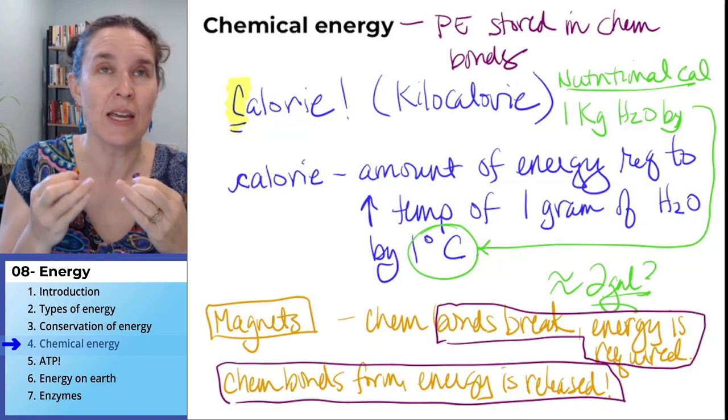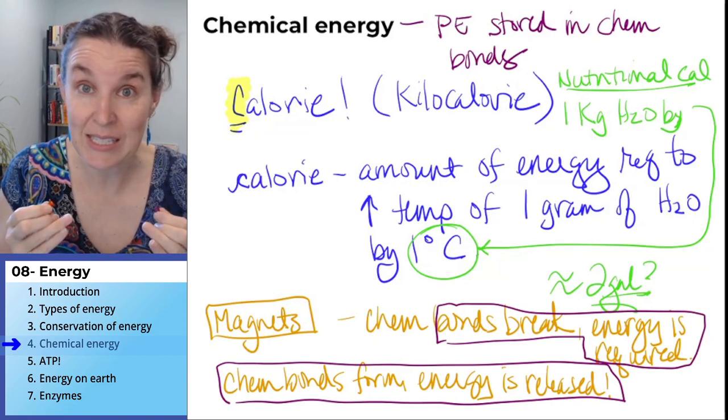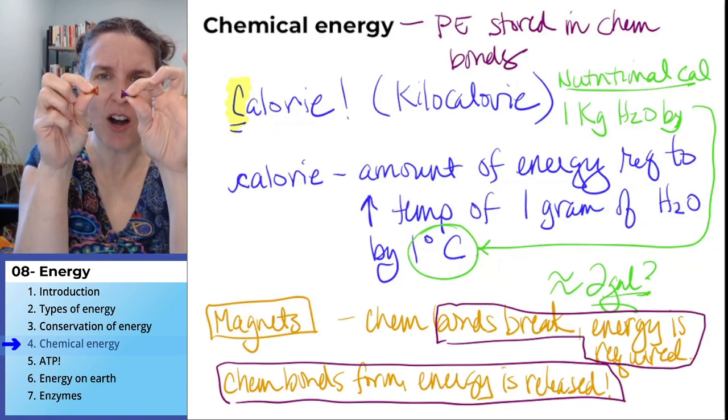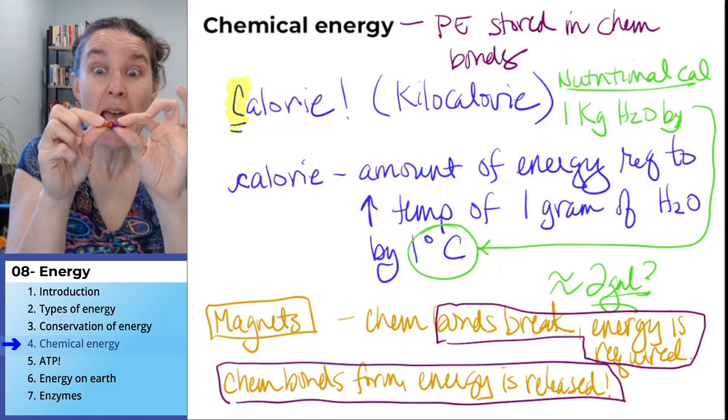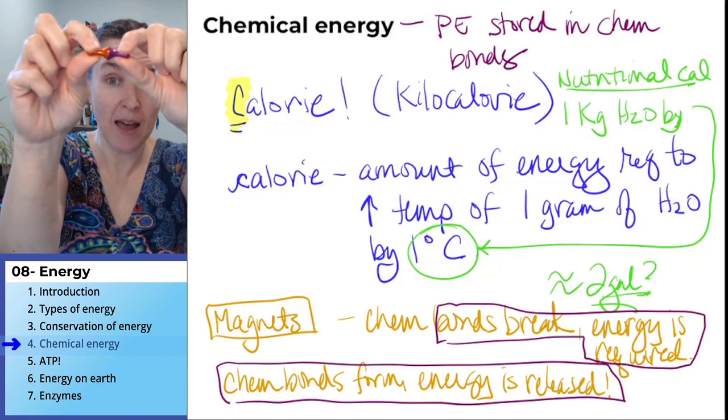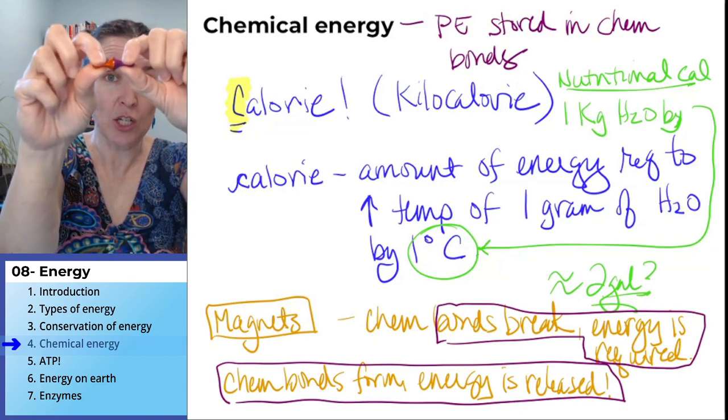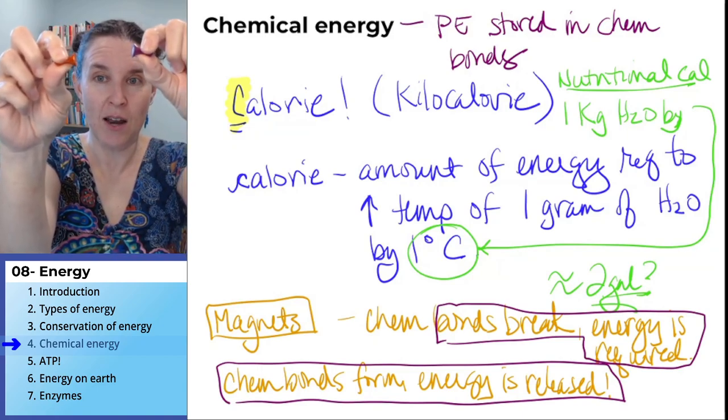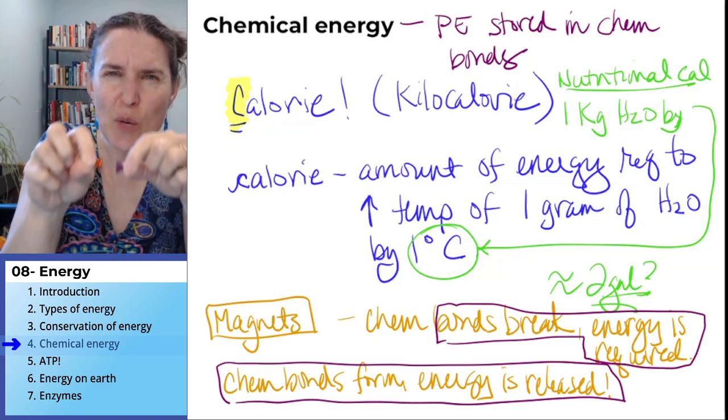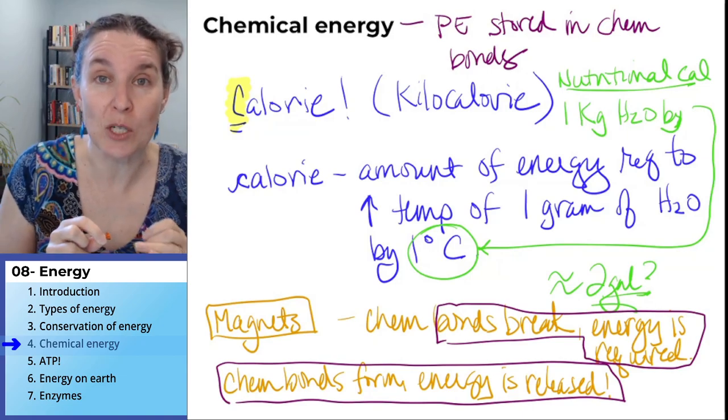Depending on the stability of the chemical bond, breaking them might be really easy or really hard. These magnets that I have are actually really strong. I'm trying to pull the magnets apart and they're not coming apart. I'm contracting my muscles more and more, putting more and more energy in to break the bond. It requires energy to break those chemical bonds.